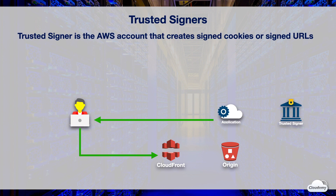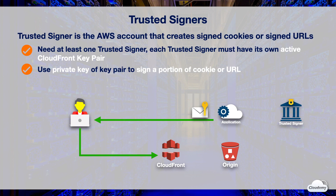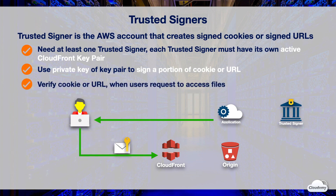A trusted signer is the AWS account that creates signed cookies or signed URLs. To create signed cookies or signed URLs, you need at least one trusted signer. Each trusted signer must have its own CloudFront key pair, and the key pair must be active. As soon as you add the AWS account for the trusted signer to the distribution, CloudFront starts to require that users use signed cookies or URLs to access files. When you create signed cookies or URLs, your application uses the private key from the trusted signer's key pair to sign a portion of the cookie or URL, and then sends it to the user. When the user requests a restricted file, CloudFront compares the signed portion with the unsigned portion to verify it hasn't been tampered with, and also verifies that the cookie or URL is still valid — for example, that the expiration date and time hasn't passed.